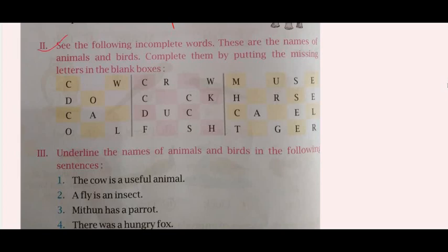Our second question: see the following incomplete words — these are the names of animals and birds. Complete them by putting the missing letters. C-O-W, Cow. D-O-G, Dog. C-A-T, Cat. O-W-L, Owl. C-R-O-W, Crow. C-O-C-K, Cock. D-U-C-K, Duck. F-I-S-H, Fish.